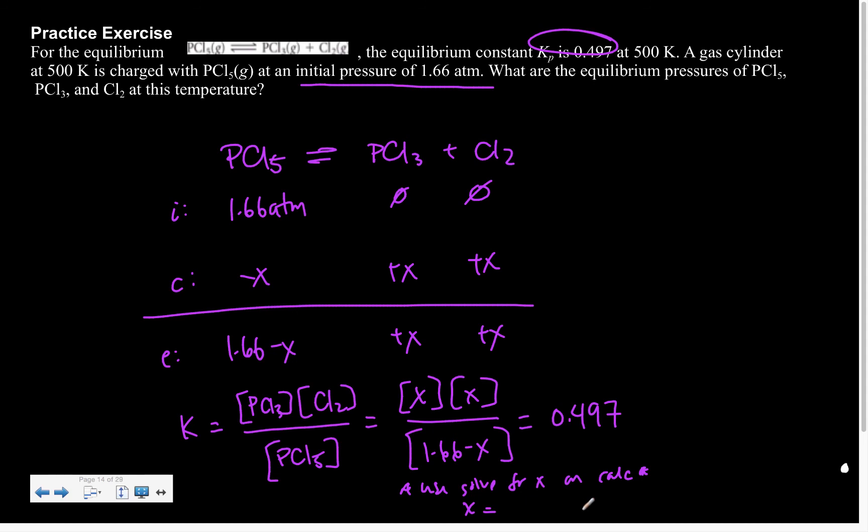Now, some of you might be like, oh, but if I do that, aren't I going to get two values for x? Yes, yes, you are. Only one of which will make sense, though. For example, if I get an x value that's bigger than this, does that make sense?